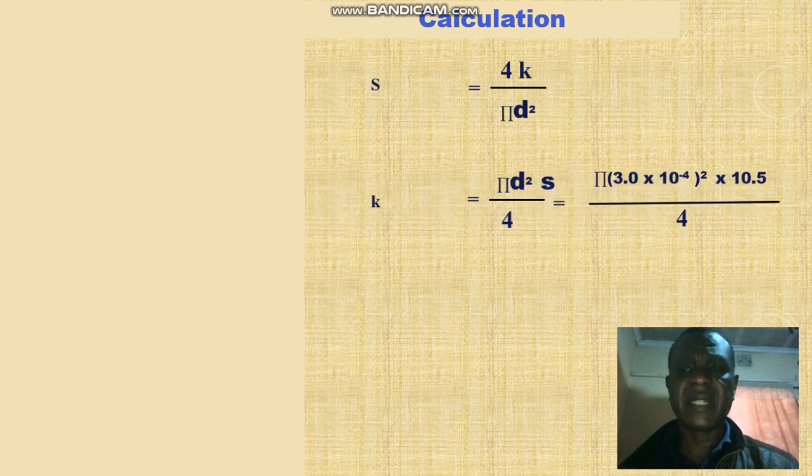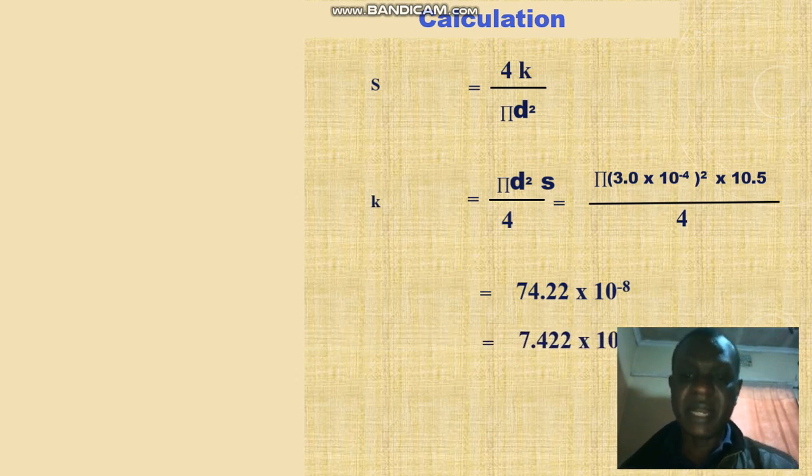And that is pi equals 3.0 times 10 raised to power minus 4 squared times 10.5 over 4. Then we have 74.22 times 10 raised to power minus 7.